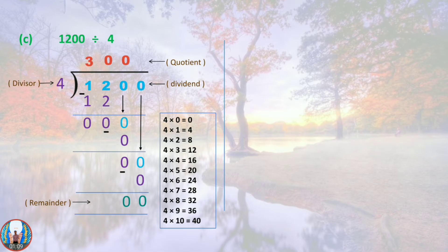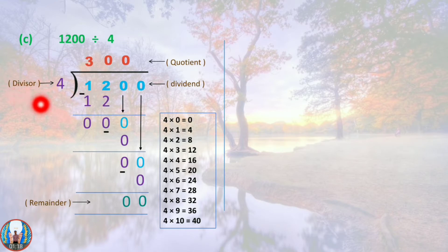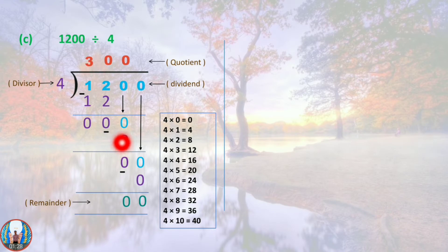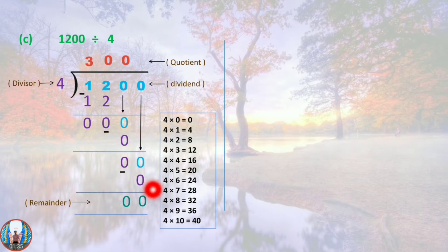Question C: 1200 divided by 4. The dividend is 1200 and the divisor is 4. 4 threes are 12; subtract 12 minus 12 equals 0. Bring down 0: 4 zeros are 0, 0 minus 0 is 0. Bring down the last 0: 4 zeros are 0, and the remainder is 0.